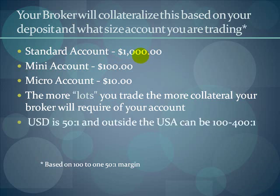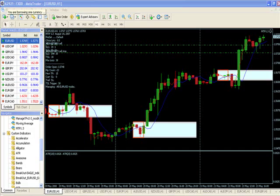In the US jurisdiction we have 50-to-1 leverage, but outside the US it can be 100-to-400-to-1. Using 100-to-1 as an example: if you have $10,000 and want to trade a standard account, the broker holds $1,000 and lets you trade $100,000 — he lends you $99,000. In the United States, he'll only lend you $50,000, or actually $49,000 with your $1,000 in collateral.